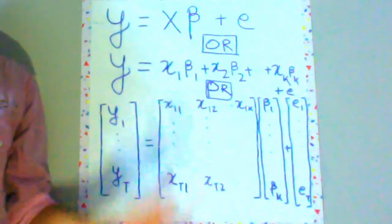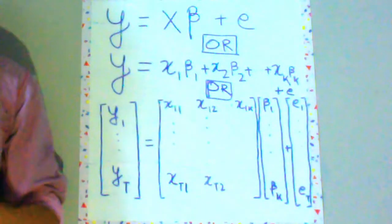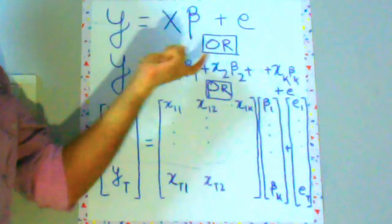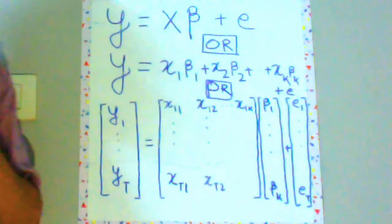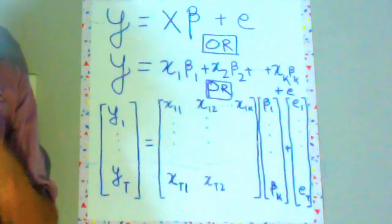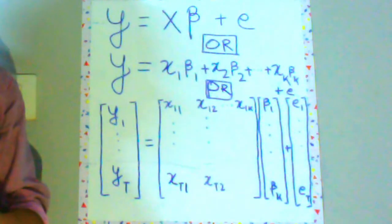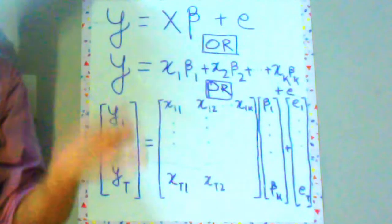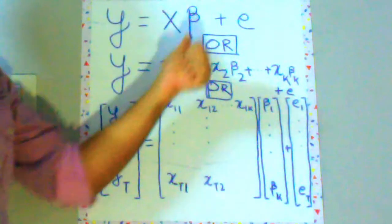So over here you have a summarization of what we have done so far. y is equal to capital X beta plus e is what is the new magical equation of econometrics which we will be dealing from now on. So from now on y is equal to a plus bx changes to y is equal to X beta plus e.